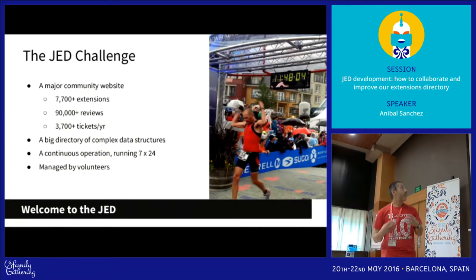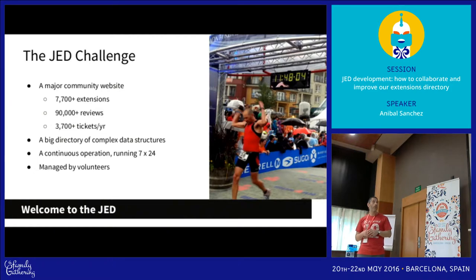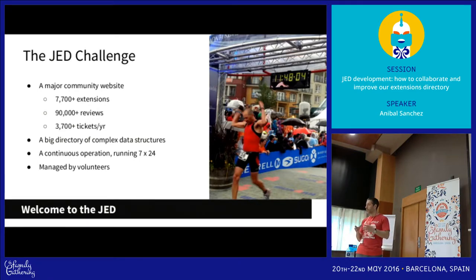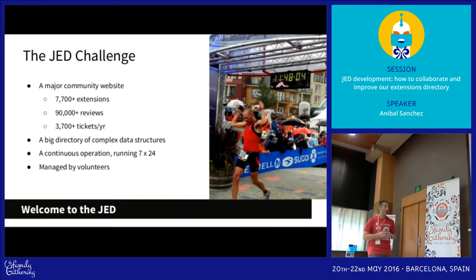Our challenge today is that we have more than 7,000 extensions published. We have a lot of reviews and we are processing around almost 4,000 tickets per year — with reports, questions, broken extensions, unpublished extensions, a lot of tickets. The whole team is currently devoted only to answering tickets. The idea is that after this presentation we will have a new development team that is going to try to improve the site. We have to remember that this is a big directory with complex data structures — it is a challenge.